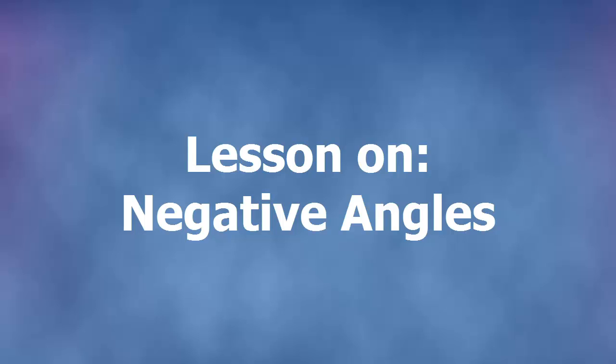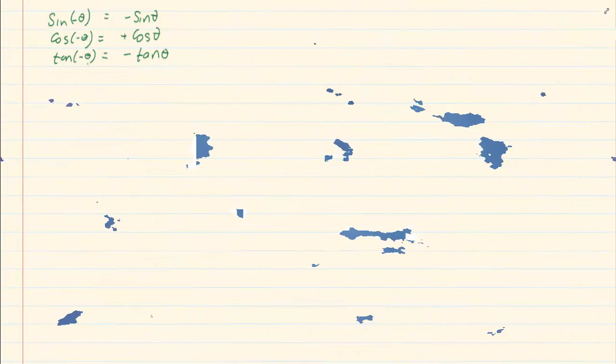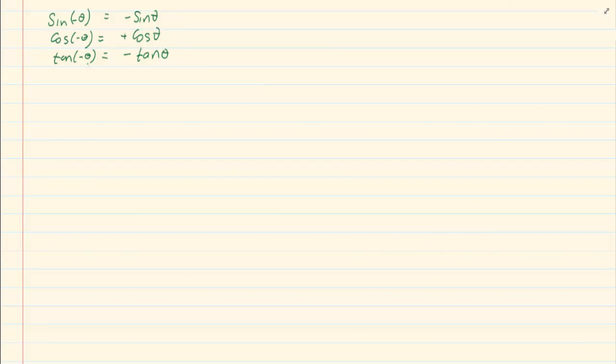Now there are many ways where people will tell you if you do negative angles the sin becomes negative, the cos becomes positive, and the tan becomes negative. To memorize that is all fair and well. So sin negative theta becomes negative sin theta, cos negative theta becomes positive cos theta, and tan negative theta becomes negative tan theta.